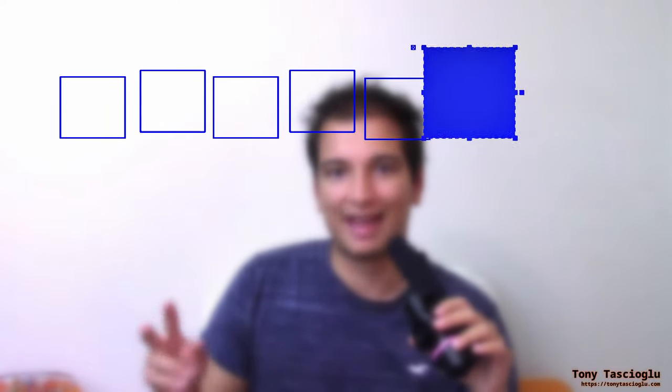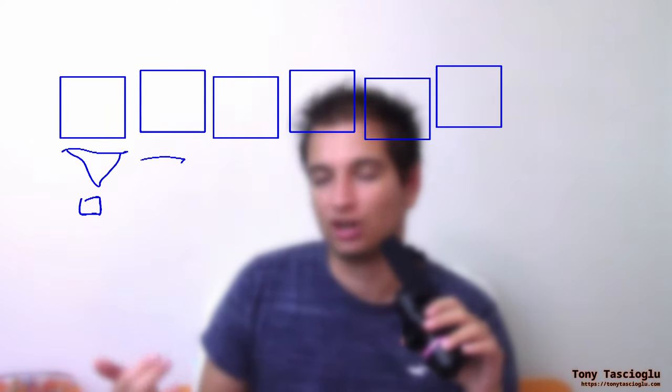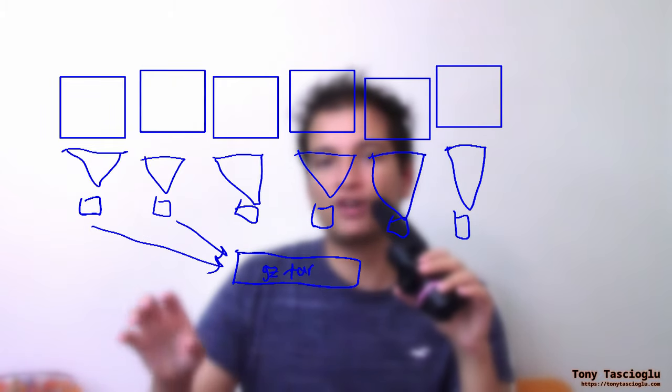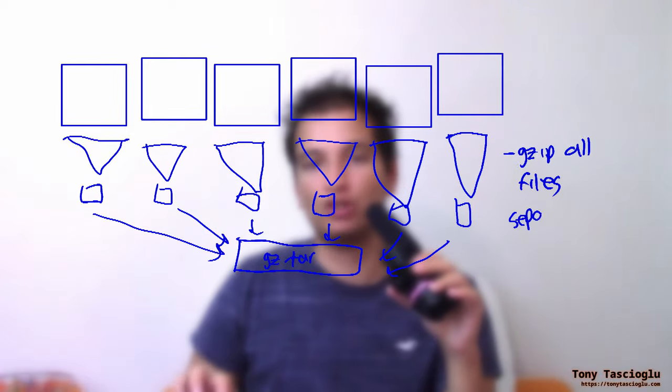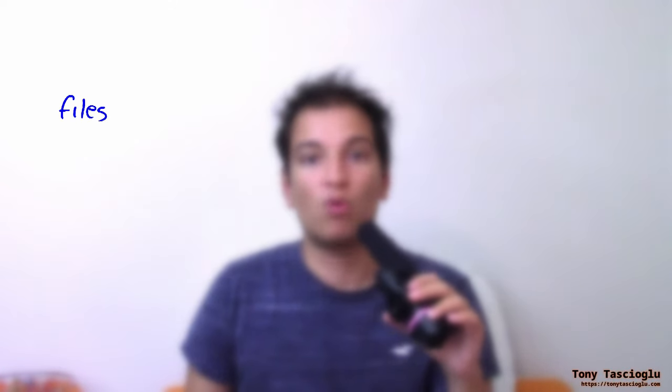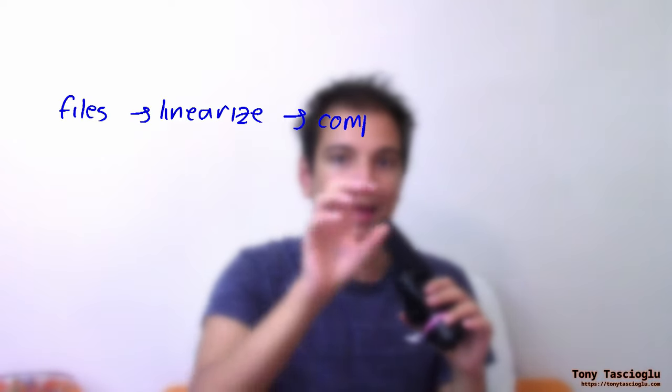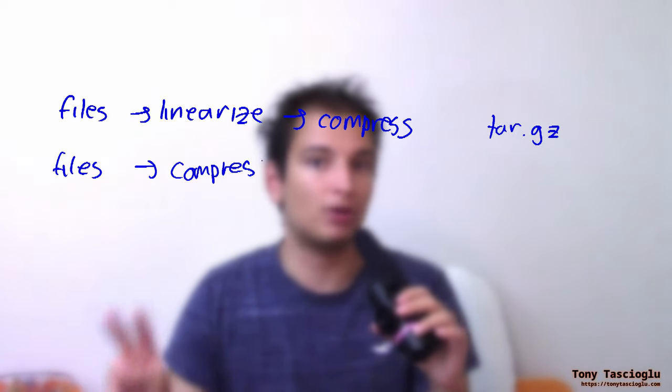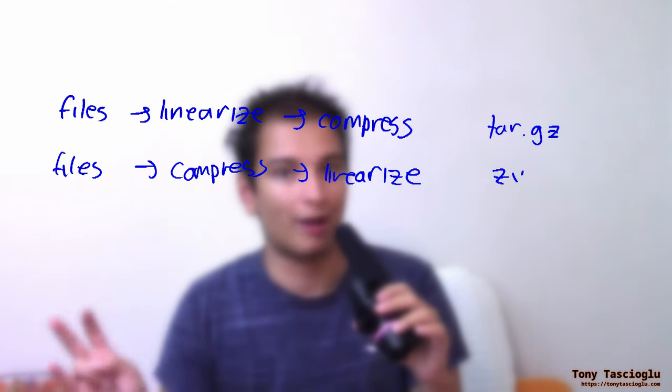But where a zip and TAR.GZ files truly differ is the order in which those two steps are done. A zip file is much more like a GZ.TAR file than it is a TAR.GZ. What does this mean? Well, on a zip file, you first compress each file individually, and then you append the compressed versions. Whereas, on a TAR.GZ file, you first appended everything, and then you compress the result. They're two different approaches, and they both have their benefits and drawbacks.